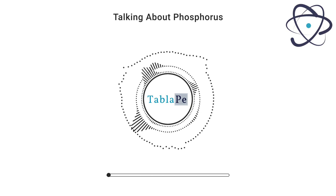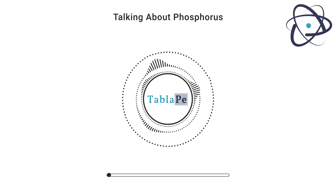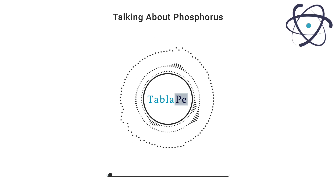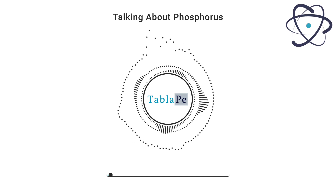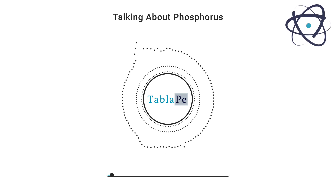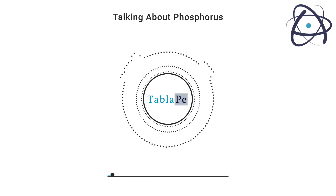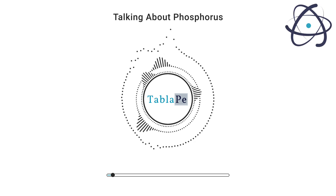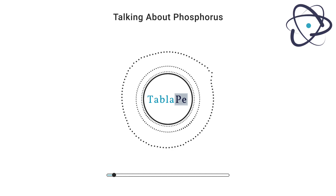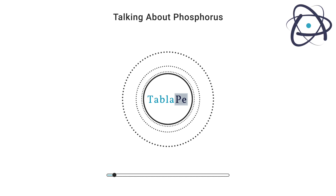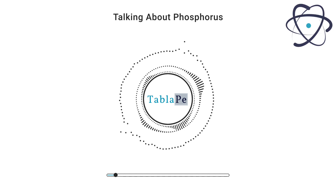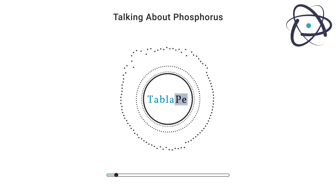Phosphorus is an essential ingredient for the normal functioning of living cells. It is a component of ATP, or adenosine triphosphate, the energy source for living systems. It plays an important role in DNA. A number of key compounds are made from phosphorus, including phosphate salts. They are used in pesticides, explosives, detergents, and fireworks.